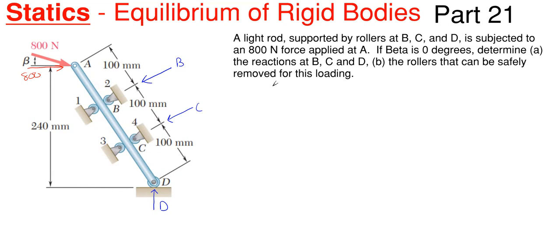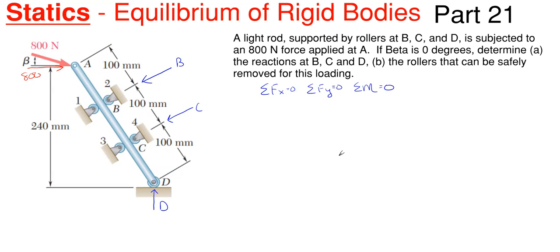I'm going to use my three equilibrium equations: summing forces in x, summing forces in y, and summing moments about a point — all of these have to be equal to zero for equilibrium to hold true. So I have three unknowns and three equations to solve for them.